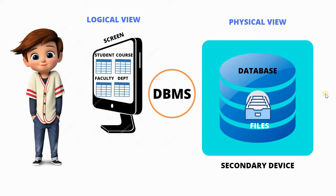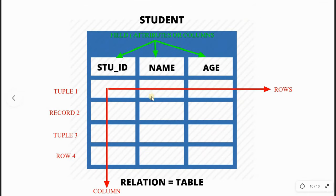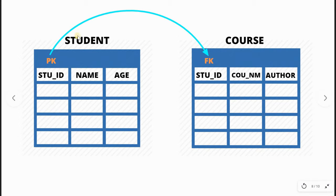Relational model mein same data jo related hota hai woh ek table mein hota hai, aur do alag-alag tables ke beech mein bhi relationship ho sakti hai. For example, ek table hai jiska naam hai Student, aur usme ek column hai student_id. Aur ek doosra table hai Course, usme bhi ek column hai student_id. Toh Student table mein jo student_id hai aur Course table mein jo student_id hai — yeh dono ek doosre ke saath related hain. Is model ko 'relational model' kehte hain — that is combination of rows and columns.